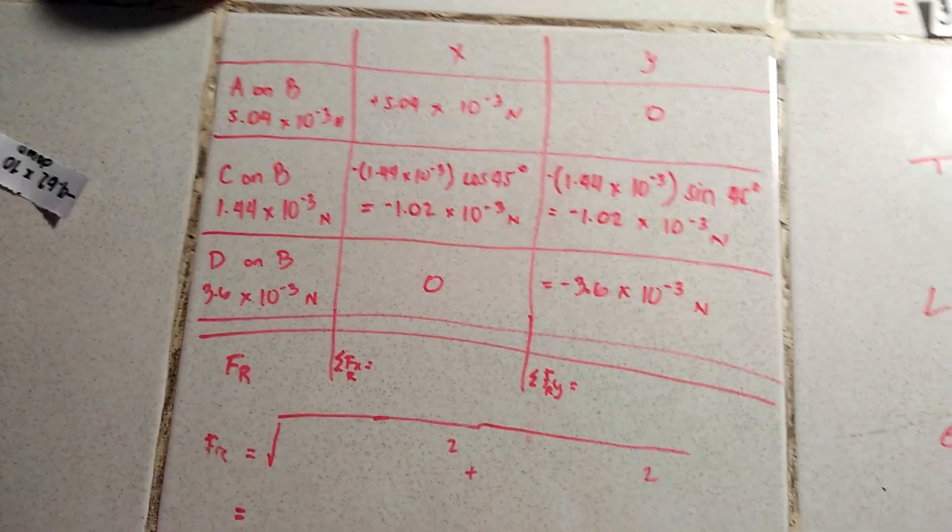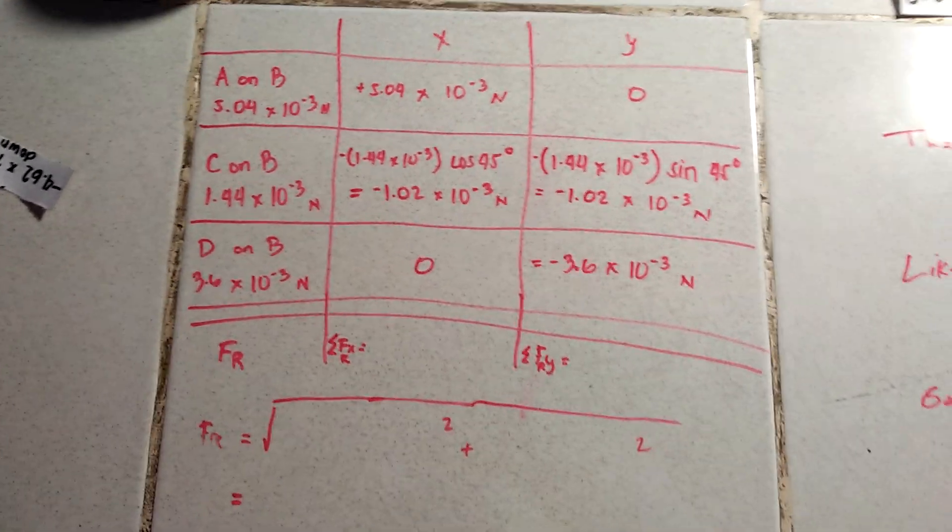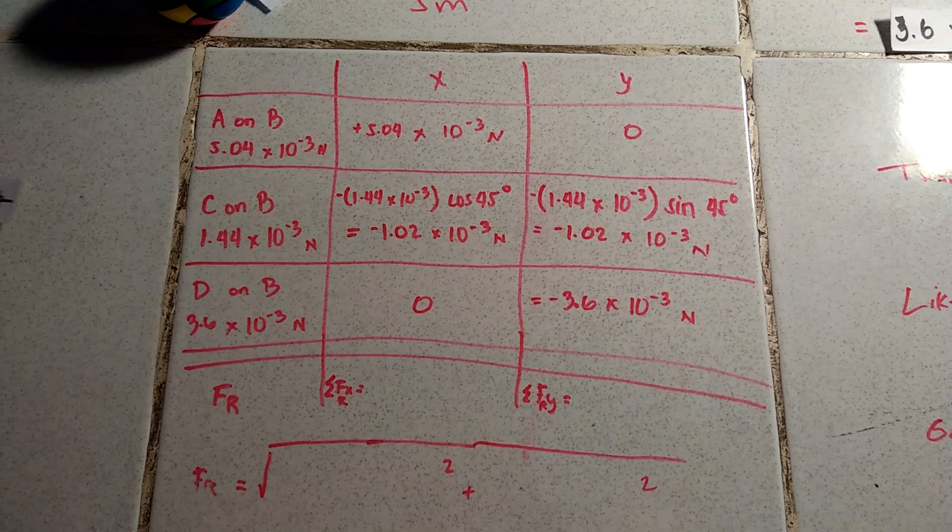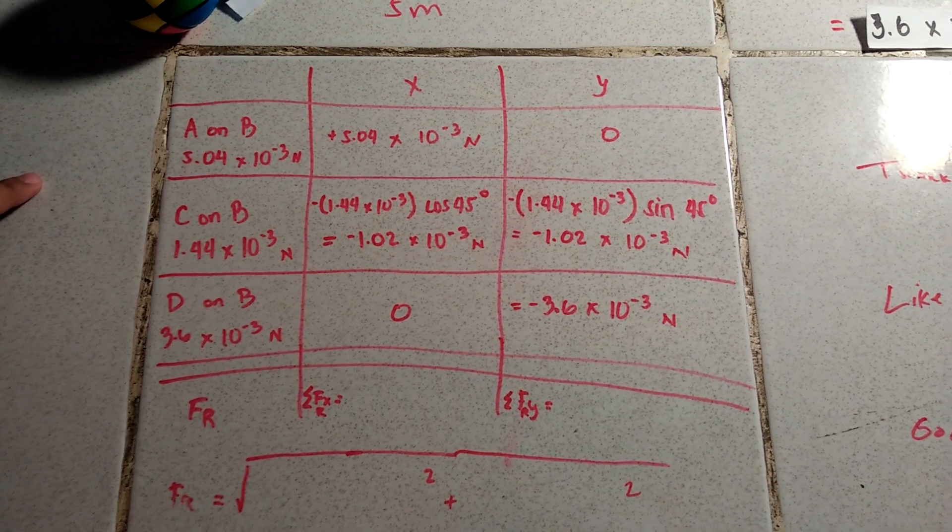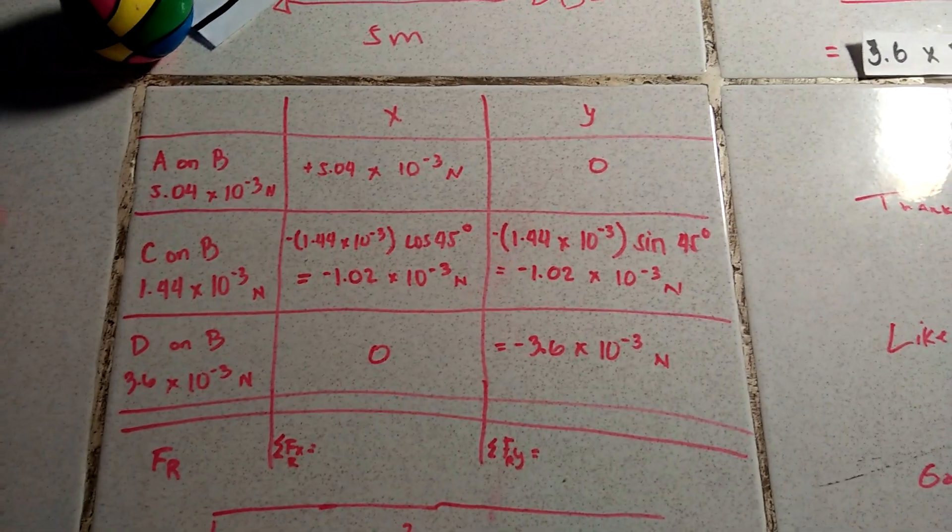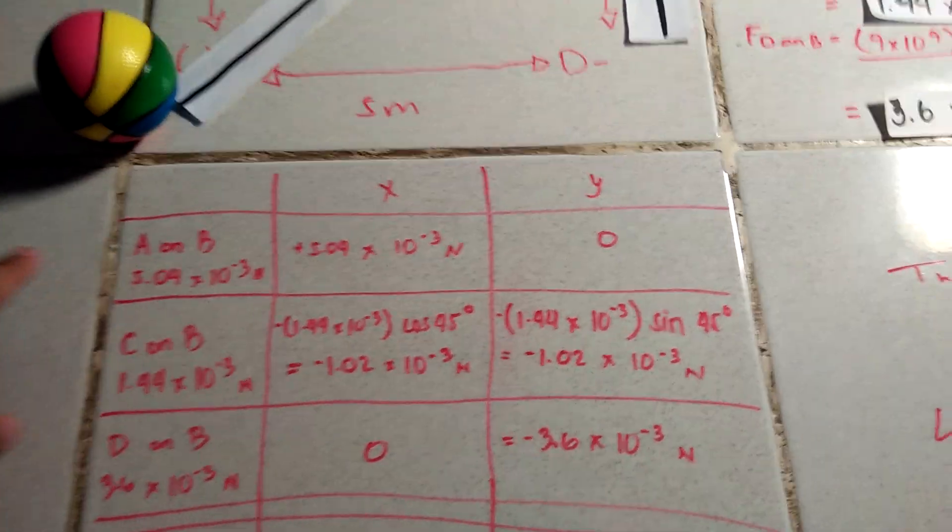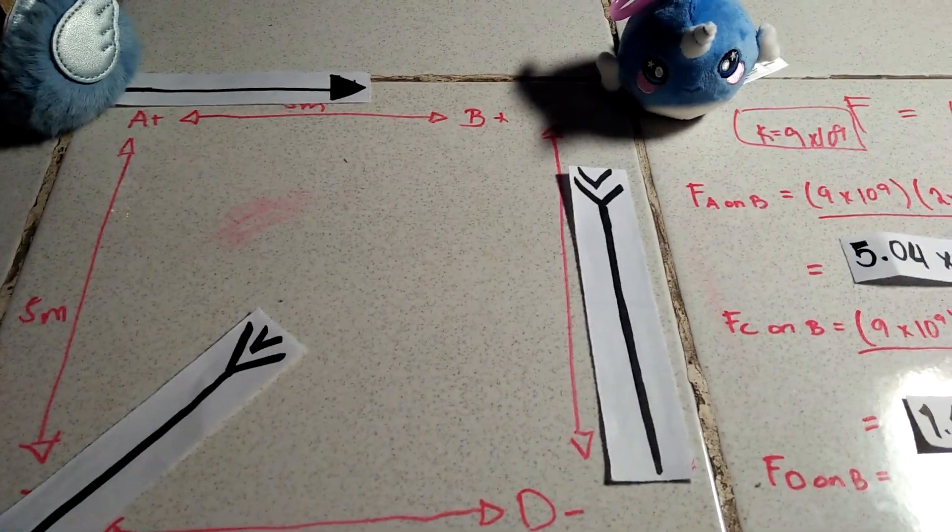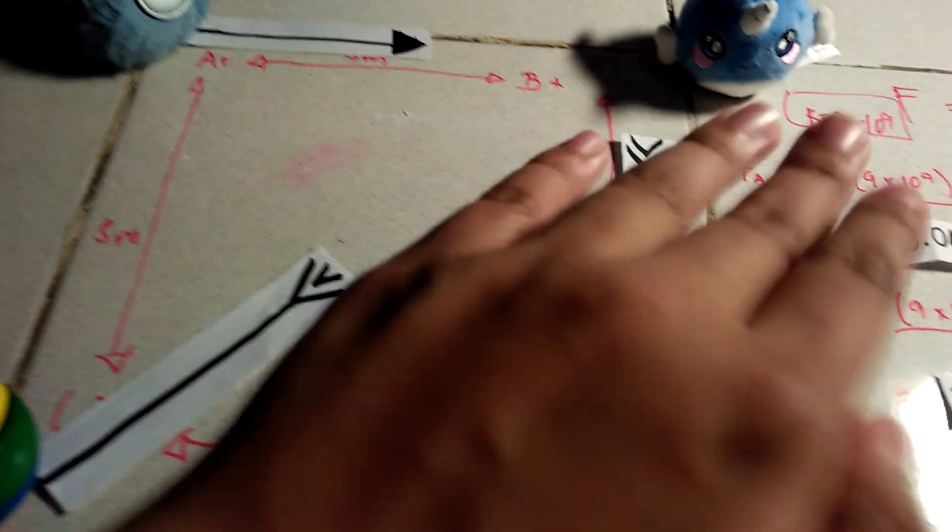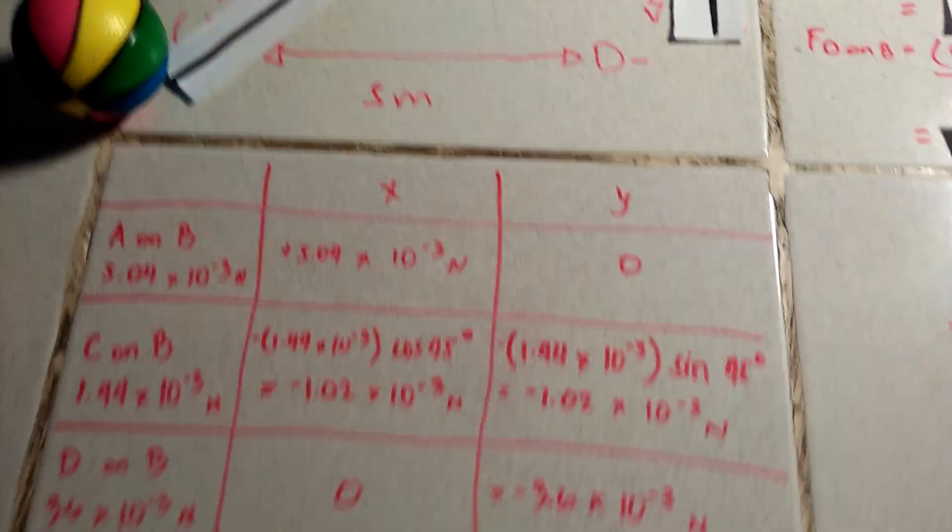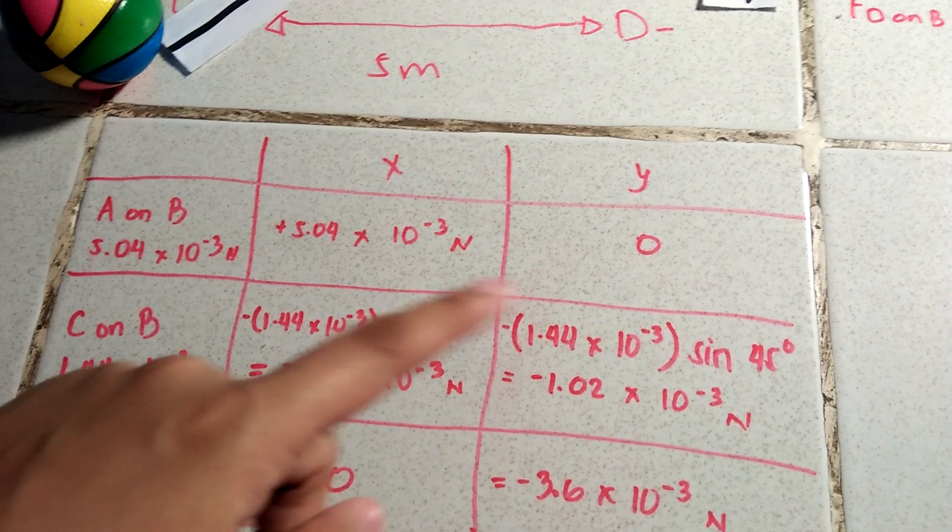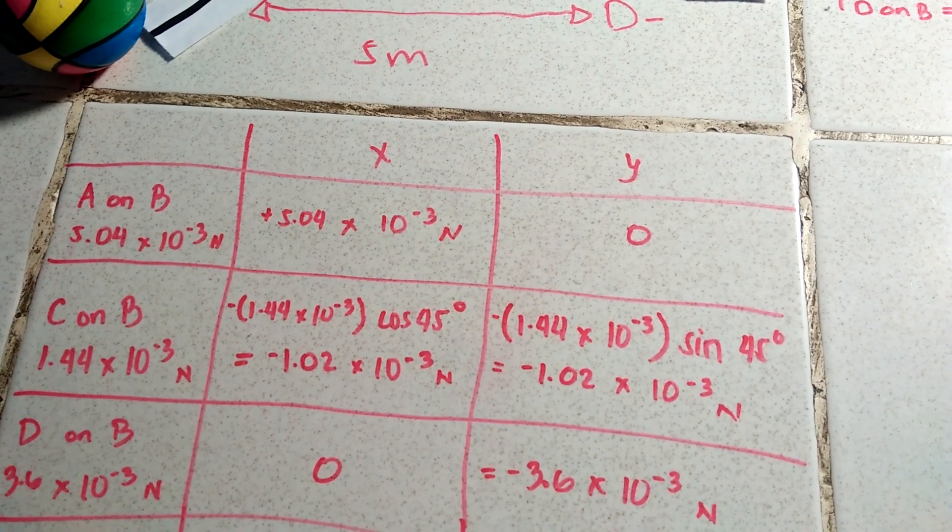So here we have the force of A on B. As we have calculated a while ago, that's 5.04 times 10 to the negative 3. Now that is an x value alone. Because the force of A on B is horizontal. So that's just an x. It doesn't have a y component. That's why that's just 5.4 times 10 to the negative 3, 0. Positive because it's going to the right.